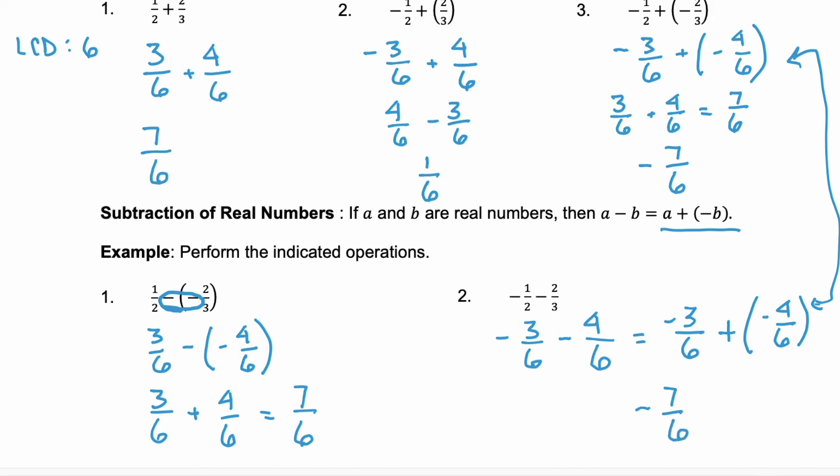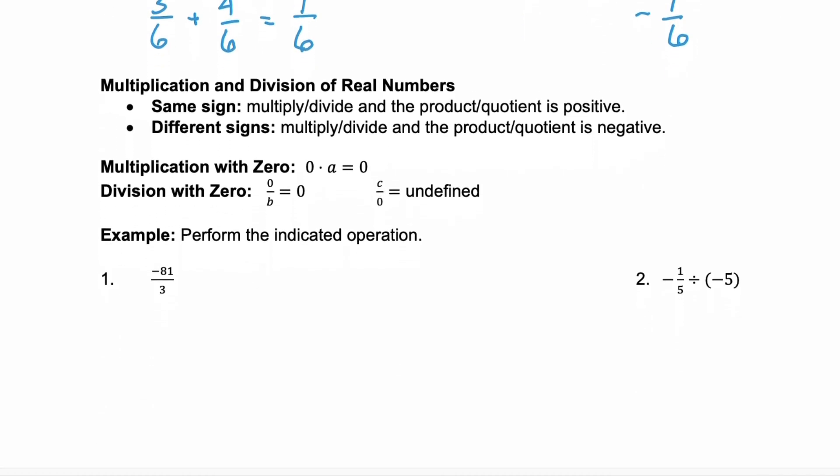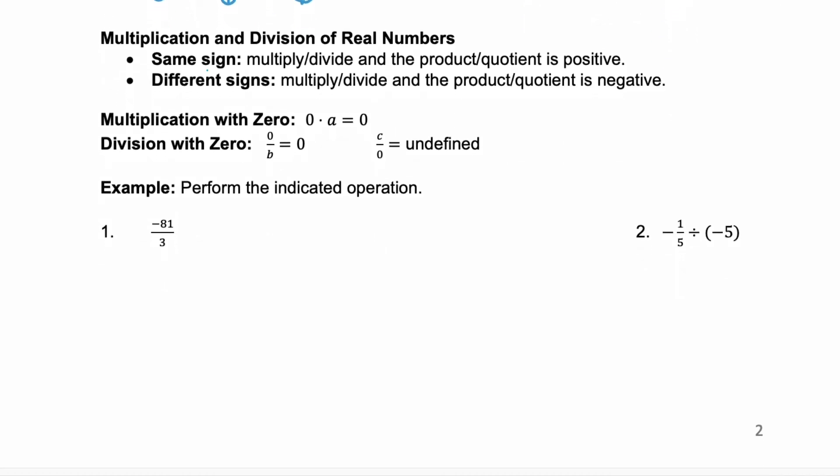Now what if we multiply and divide real numbers? When you multiply and you have the same sign, it stays positive. So a negative times a negative is a positive. A positive times a positive is a positive. When you have different signs, that's when you end up with a negative product or quotient.